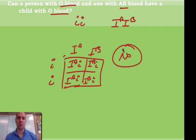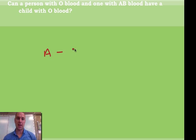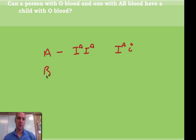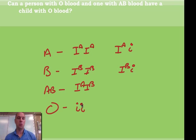This is a classic kind of question they'll ask you on the EOC, so make sure you remember the blood types — they won't give them to you. A blood has two genotypes: homozygous or heterozygous. B blood also has two ways: homozygous or heterozygous. AB has only one way to get it, and O has only one way to get it. You need to remember these — they will not give them to you on the test.